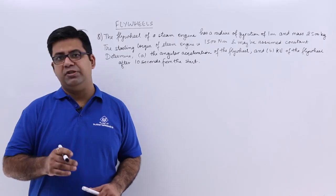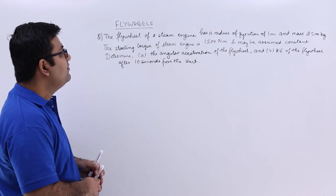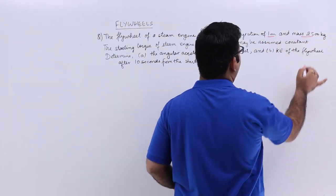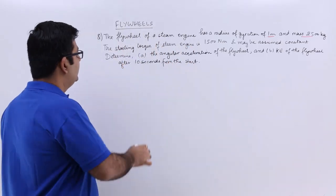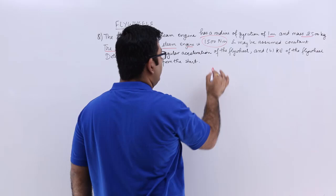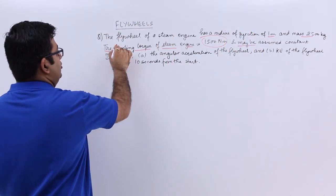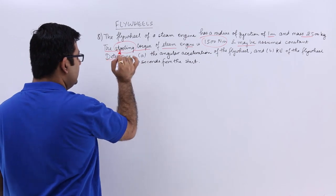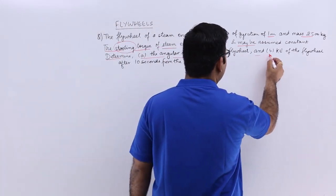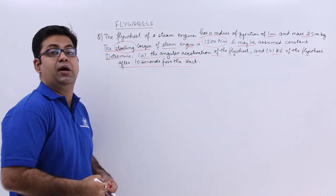Now let's look at a question on flywheels. The flywheel of a steam engine has a radius of gyration of 1 meter and a mass of 2500 kg. The starting torque of the steam engine is 1500 newton meters and may be assumed constant. Determine the angular acceleration of the flywheel and the kinetic energy of the flywheel after 10 seconds from the start.